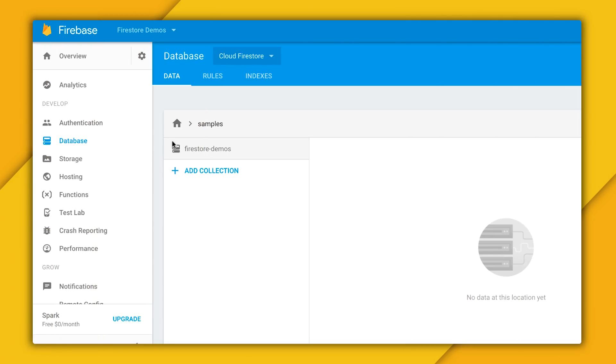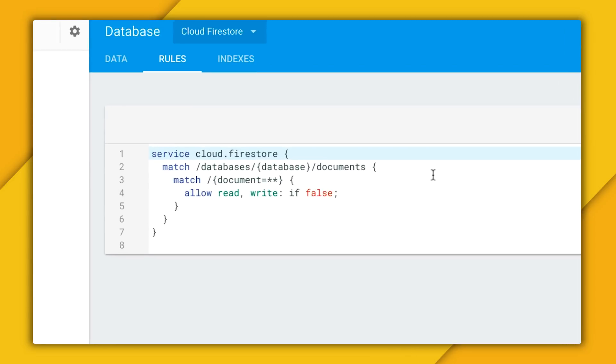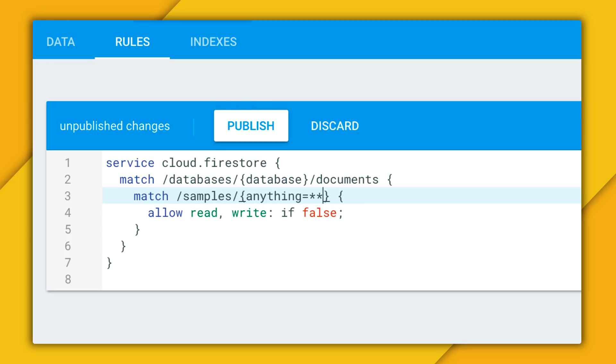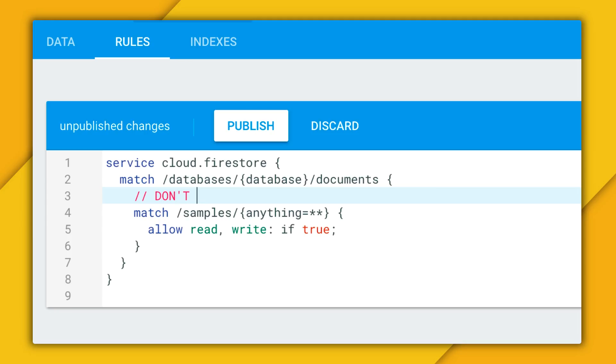So let's head on over to the Firebase console, make sure I've got my project selected and I'm in the database section. And then here, I'll make sure Cloud Firestore is selected for my list of database options. And then I will click on the Rules tab. And I'm going to add this here to allow reading and writing to anything that's part of my samples collection. Now, this is a pretty terrible idea from a security perspective, but at least I've contained the damage to just what's in my sample collection. So I'll publish that and we're done.